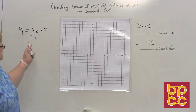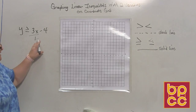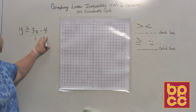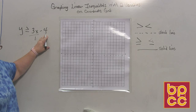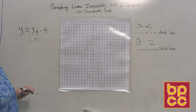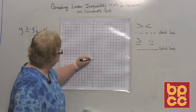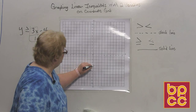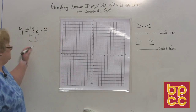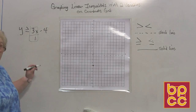When we put it in slope-intercept, this is the y-intercept. So we'll begin by going down the y to negative 4, and then we're going to do what the slope tells us to do, which is up 3 to the right 1. Let's go down the y: 1, 2, 3, 4. The slope is a positive 3, so we'll go up 3 and over 1.